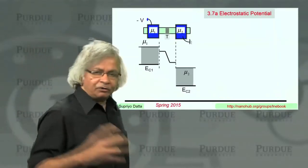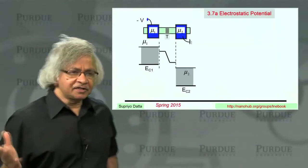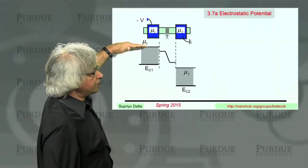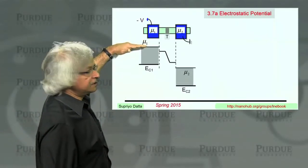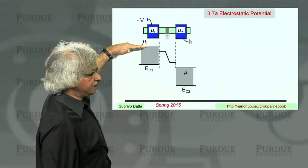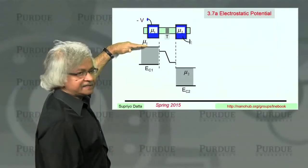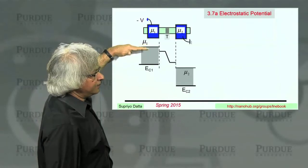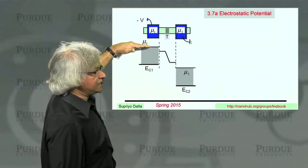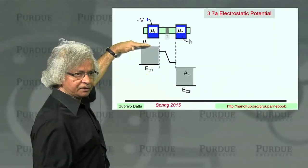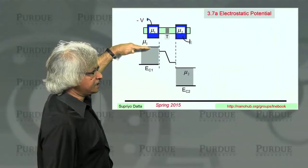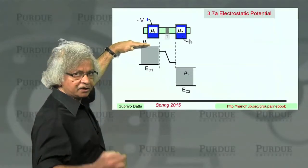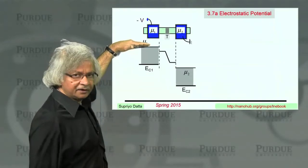What do we mean by the electrostatic potential? One way to think about it: we draw this electrochemical potential here, that's mu1. What it denotes is the level up to which the states are filled — at low temperatures, at least. At high temperatures, it's spread out a little, but it's still a good measure of the level of filling.